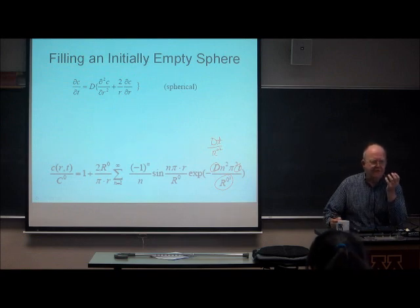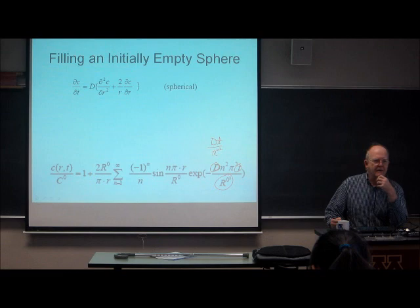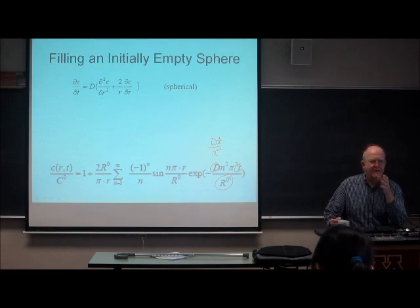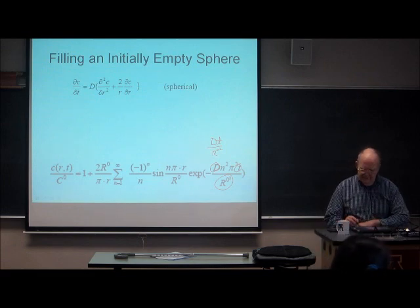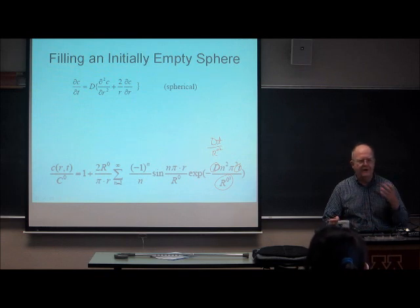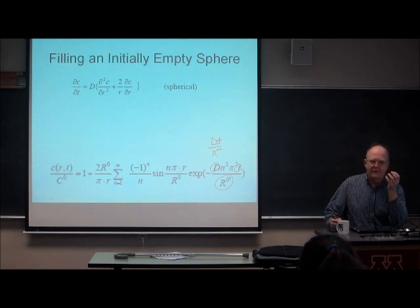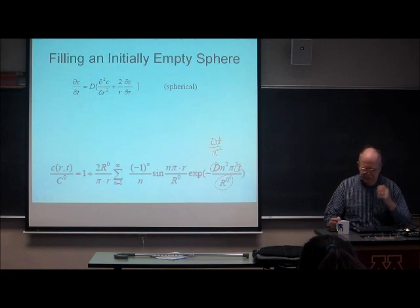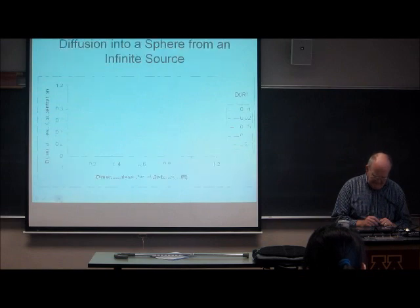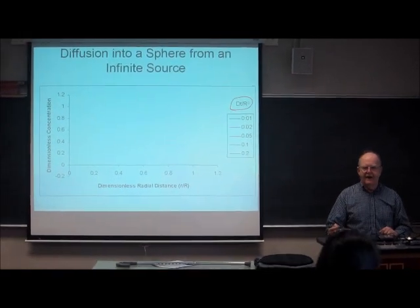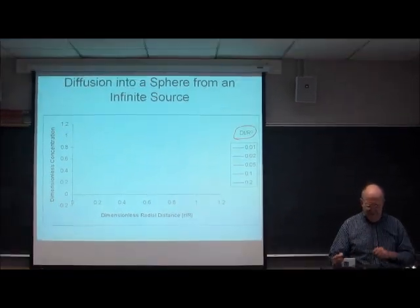Whenever you have a transcendental function — sine, cosine, inverse, hyperbolic, tangent, whatever — the argument of that function must be dimensionless. And so dt over r naught squared is dimensionless. That's the proper quantity to give you a generalized plot. That's why I picked that to represent the time-dependent variable.